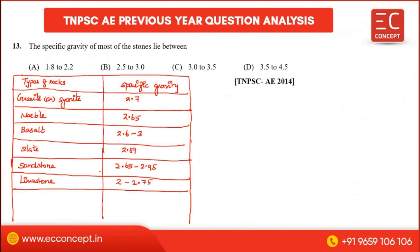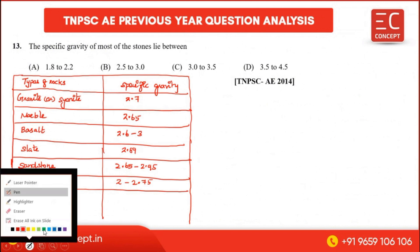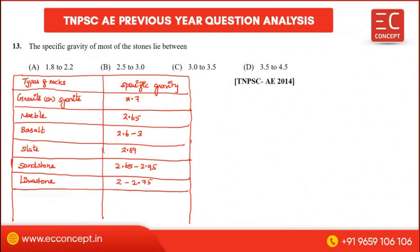So these are the various specific gravity values for different stone types. Looking at the range, the specific gravity of most stones generally varies from 2.5 to 3. So the answer is 2.5 to 3.